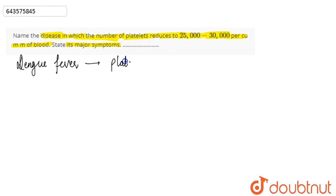get reduced to as low as 25 to 30,000, 25 to 30,000 per cubic mm of blood.